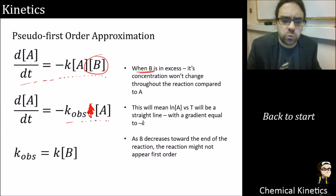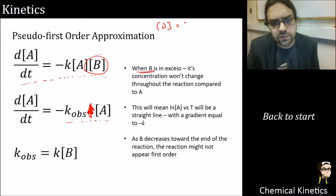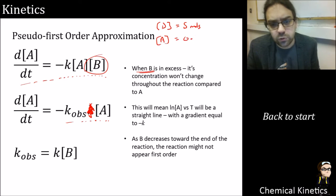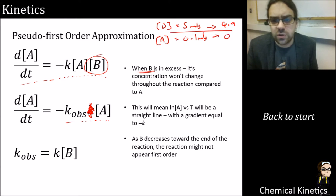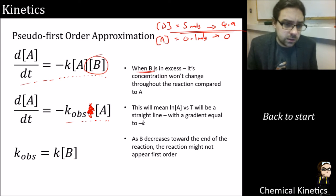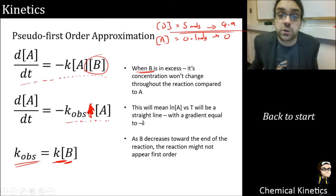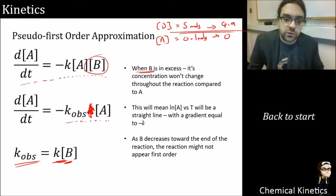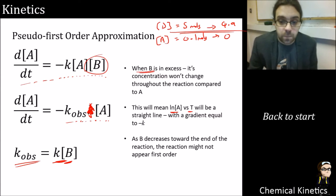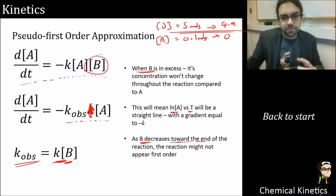For example, if the starting concentration of B is 5 moles and A is on the order of 0.1 moles, then the final concentration of B would be about 4.9 — as far as we're concerned that's pretty much staying constant. So we can simplify things down so that k_obs, the observed rate constant, equals k times the concentration of B. If we plot log A versus t we get a straight line.